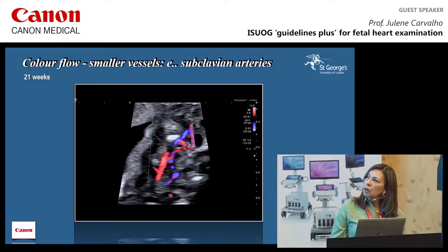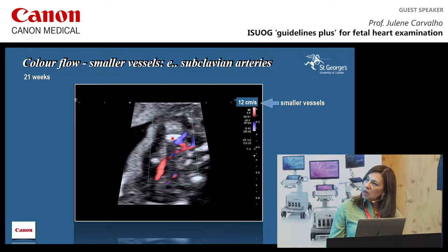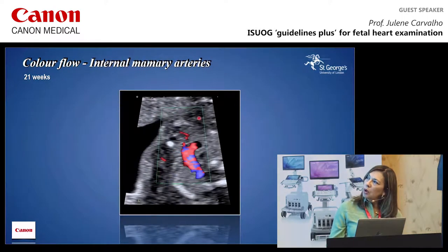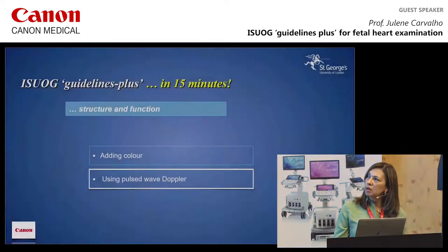Looking closely from the subclavian arteries, there will be the internal mammary arteries, which are branches of the subclavian arteries — you just see one here. They delineate the thymus, anterior to the mediastinum. The right subclavian goes anteriorly towards the right arm. This has been described as the 'thymus box' — the branches from the subclavian arteries, the internal mammaries, which delineate the position of the thymus. Very useful when you have an aberrant right subclavian artery or right aortic arch.